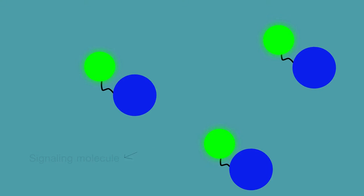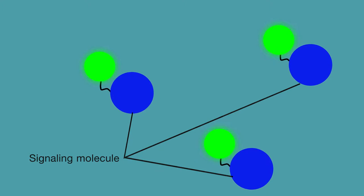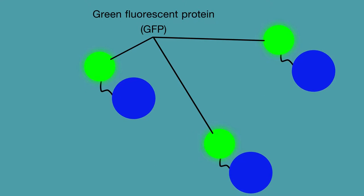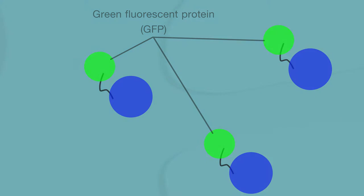Until now, scientists have been limited to using just one color when tracking signaling molecules in neurons. Green fluorescent protein, or GFP, is a good workhorse, but it's been difficult to find other colors that can work with it.